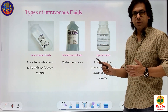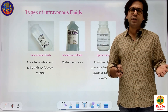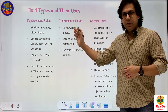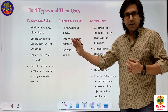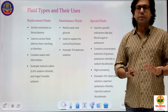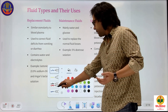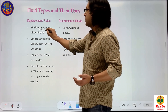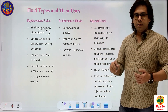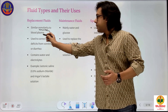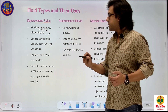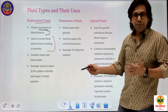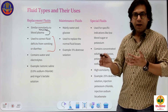Replacement means to replace, maintenance means to maintain, and special means for special conditions. Replacement fluids like 0.9% sodium chloride have a similar osmolarity to blood plasma. They are used to correct fluid deficits due to vomiting, diarrhea, and loss of water and electrolytes — for example, isotonic saline and Ringer's lactate solution.